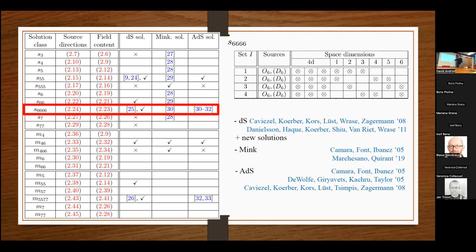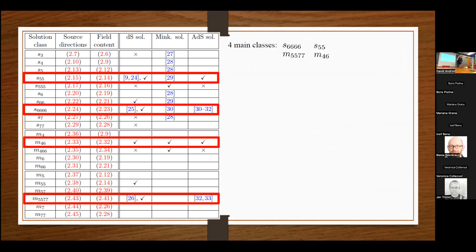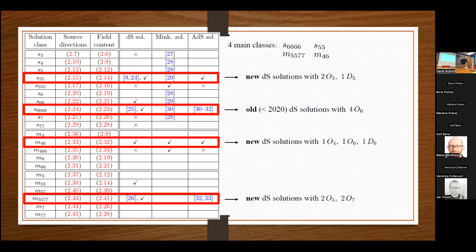Interestingly, we still have quite a lot of physics there: supersymmetric solutions, non-supersymmetric solutions, stable, unstable, scale-separated, not scale-separated. There's quite a lot of physics already in this sample. Let me come back to de Sitter. I think there are four main classes here, with some T-duality relations among some of them. The old solutions prior to 2020 were found in one class. More recently, in the last two or three years, we found new de Sitter solutions in other classes — with different orientifold and D-brane configurations.